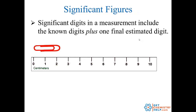So let's look at a ruler and figure out how many significant digits we should record for a particular measurement. The rule is that you're going to record all of the known digits plus one final estimated digit. Another way to think of this is you're going to estimate one final place.